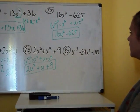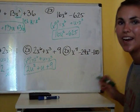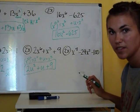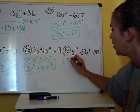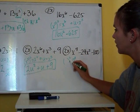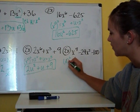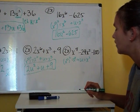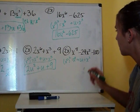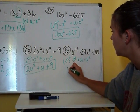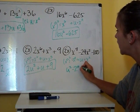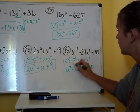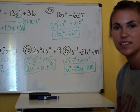Last but not least, we have X to the fourth minus 29X squared minus 100. Since 2 is half of 4, we are going to be able to put this in quadratic form. What can I square to get X to the fourth? That is X squared, so U equals X squared. Therefore the expression becomes U squared minus 29U minus 100, and that is quadratic form.